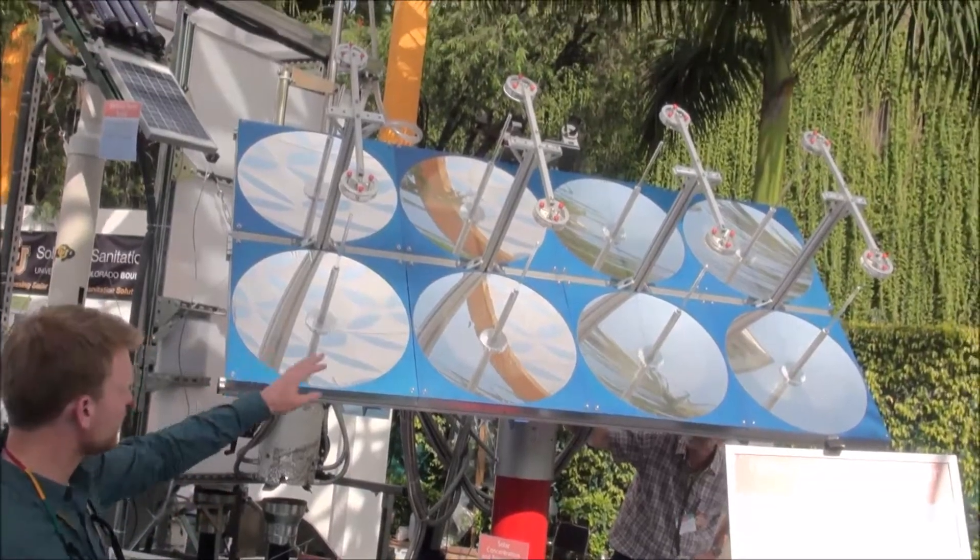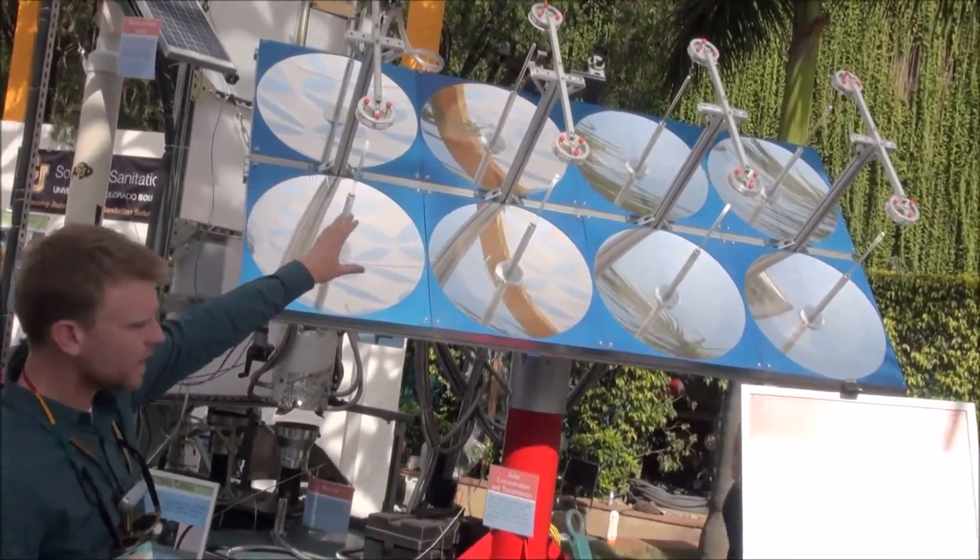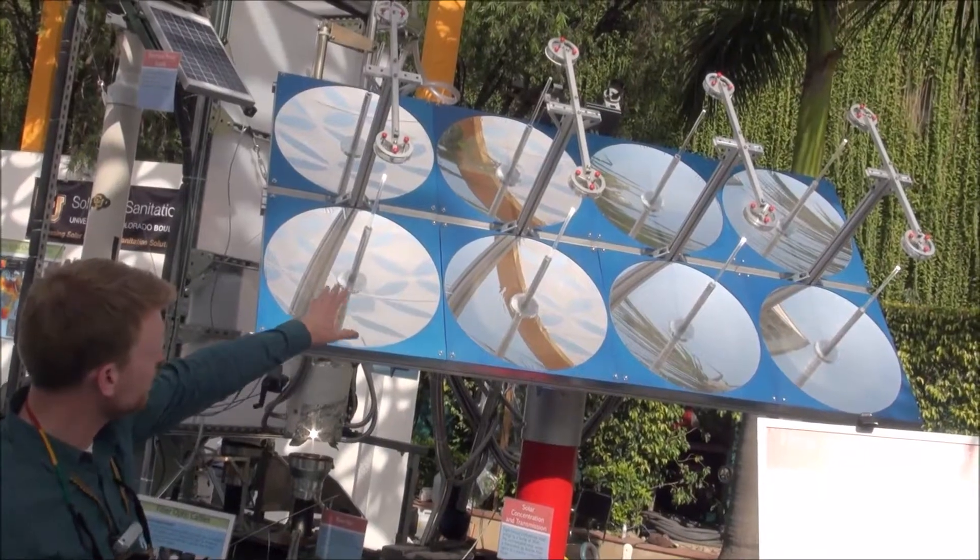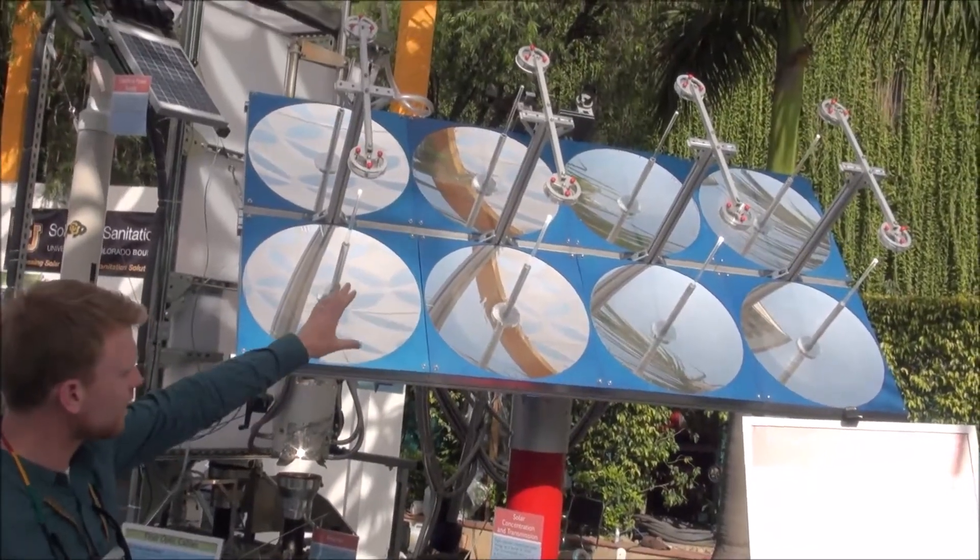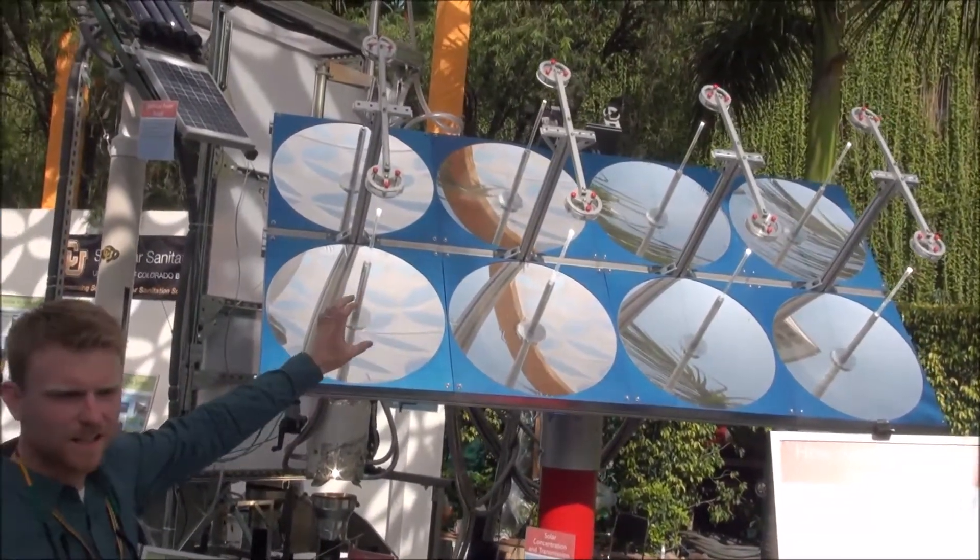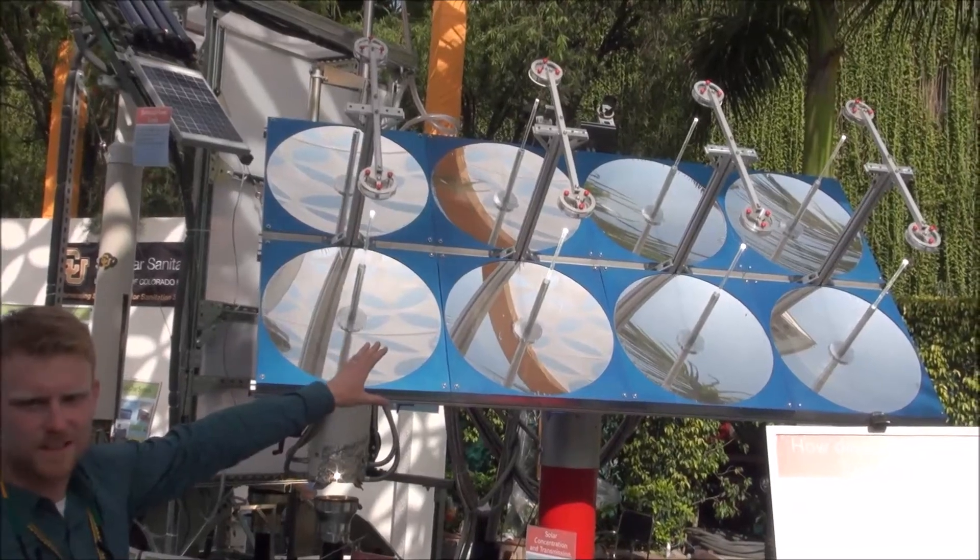When this goes on sun, you can see it tracking. It finds the sun and then you see the quartz rods start to glow. That's where all that high energy flux is entering the system.